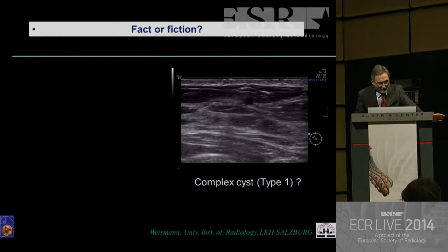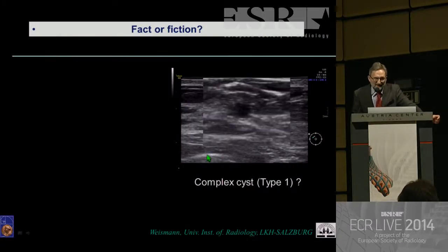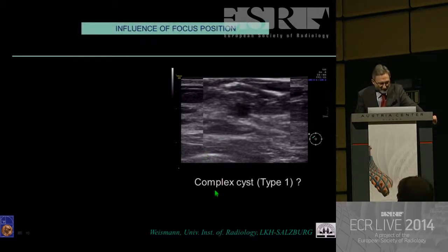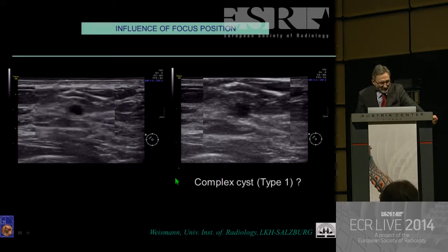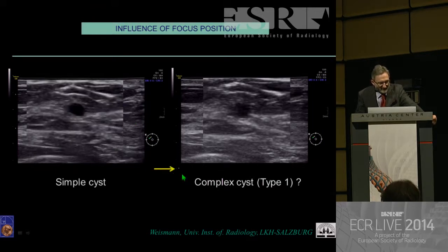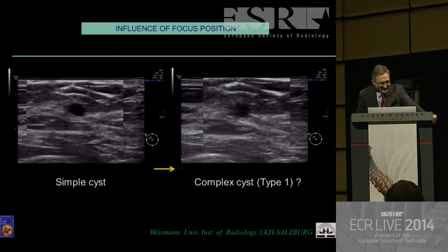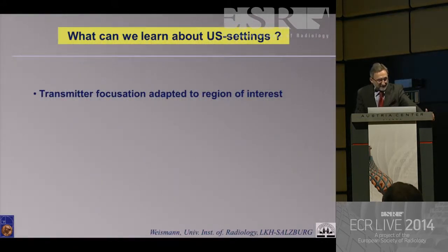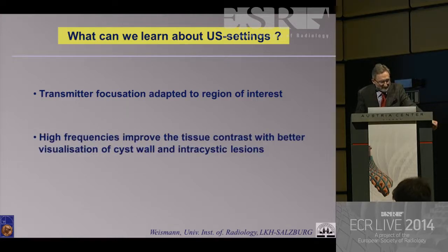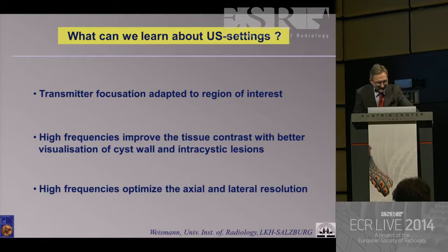Fact or fiction: is this a complex cyst or a solid lesion? This is the same structure — it's completely clear it's a microcyst, just a focus close to the chest wall and the lesion is completely out of focus. You have to keep an eye on whether the settings are in a proper position. The transmitter focus must be adapted to the region of interest. High frequencies improve tissue contrast with better visualization of the cyst wall and intracystic lesions, and optimize axial and lateral resolution.